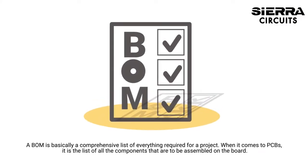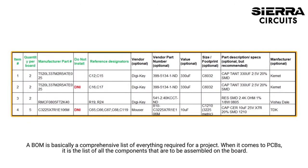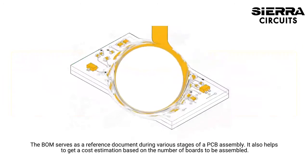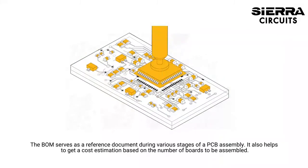A BOM is basically a comprehensive list of everything required for a project. When it comes to PCBs, it is the list of all components that are to be assembled on the board. The BOM serves as a reference document during various stages of the PCB assembly. It also helps to get a cost estimation based on the number of boards to be assembled.